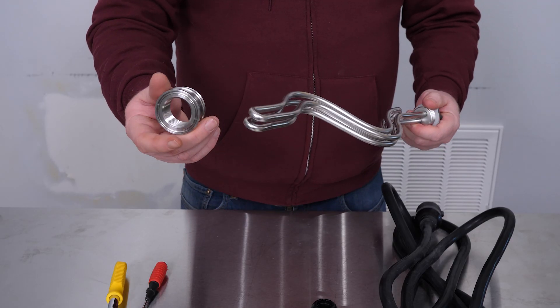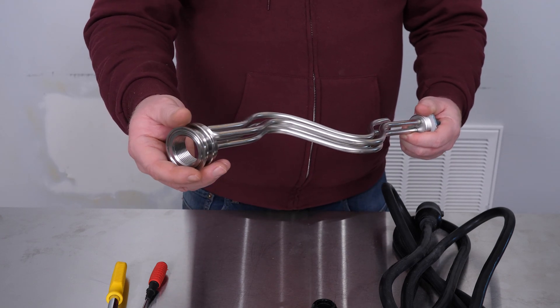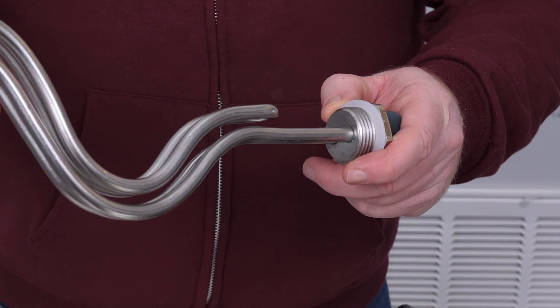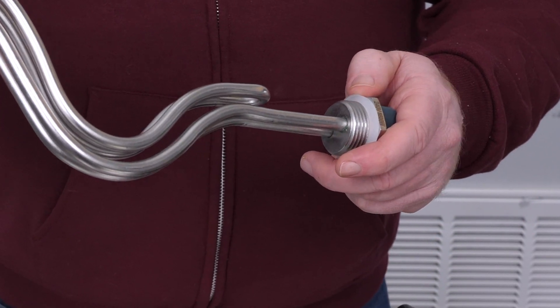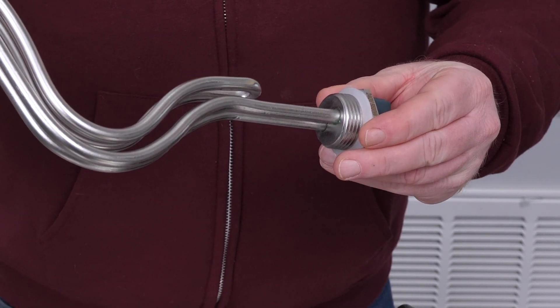Next, slide on the portion that has the inch and a half ferrule. That will slide over the heating element. Before you install it, make sure you have your gasket on your actual heating element. That's installed from the factory, and it's what makes the liquid-tight seal.